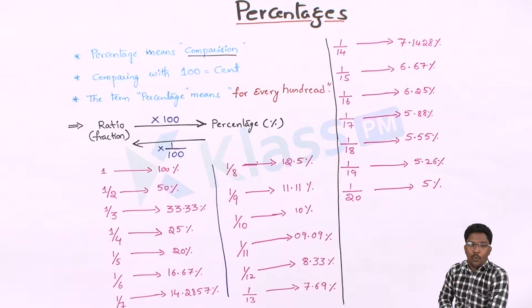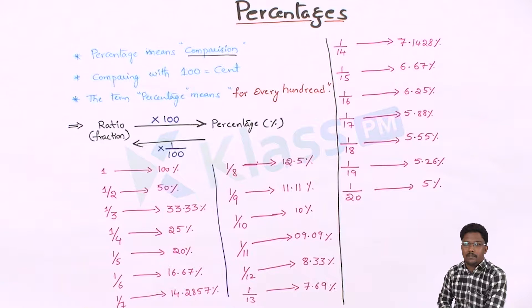What do you mean by percentage? Everyone says percentage means it's a hundred percent. Why is it a hundred percent? Because the name itself defines 'percent.' We call it century — century means hundred years. Centimeters, percent means 'for hundred.' We are comparing everything with the value hundred.